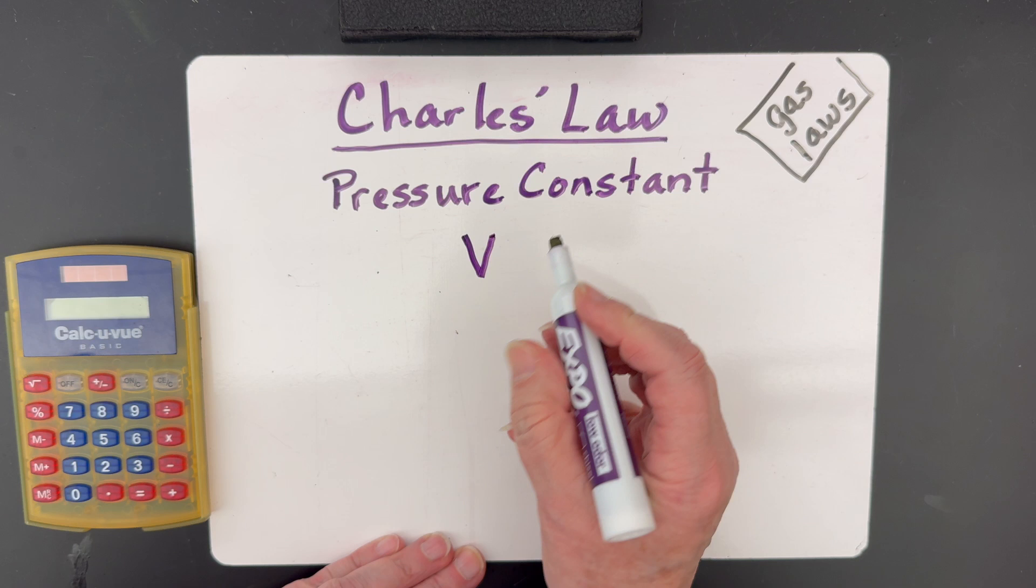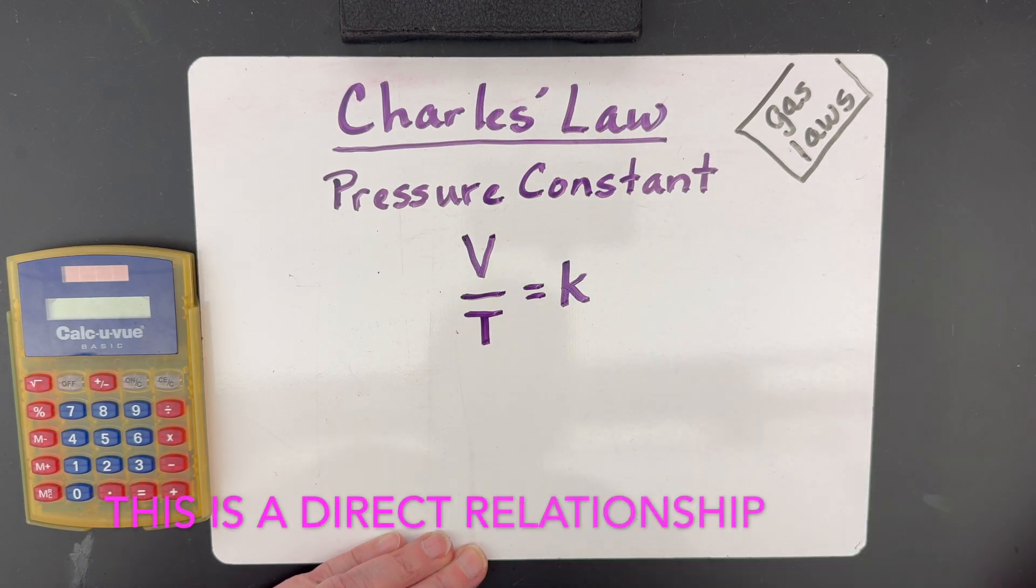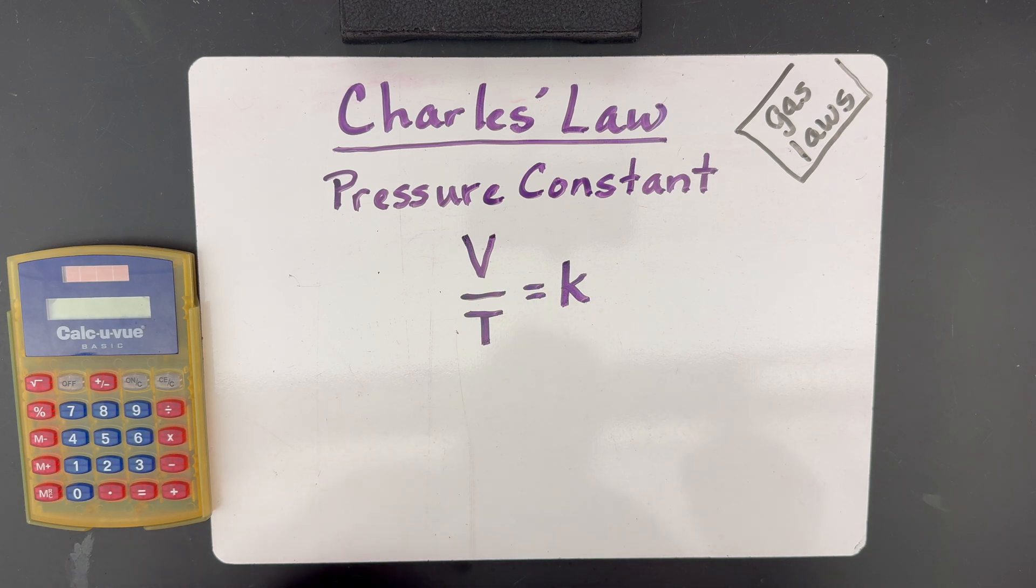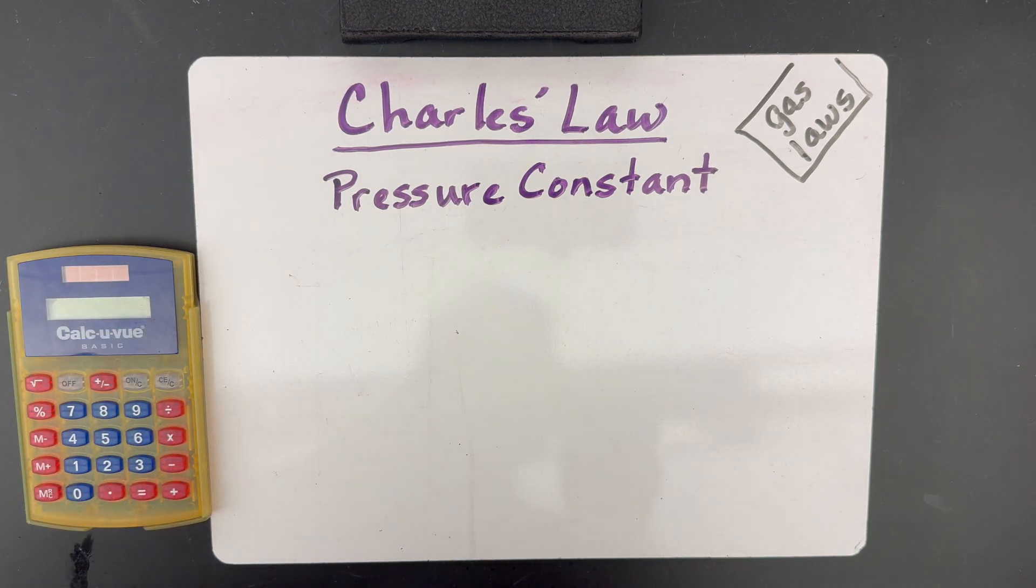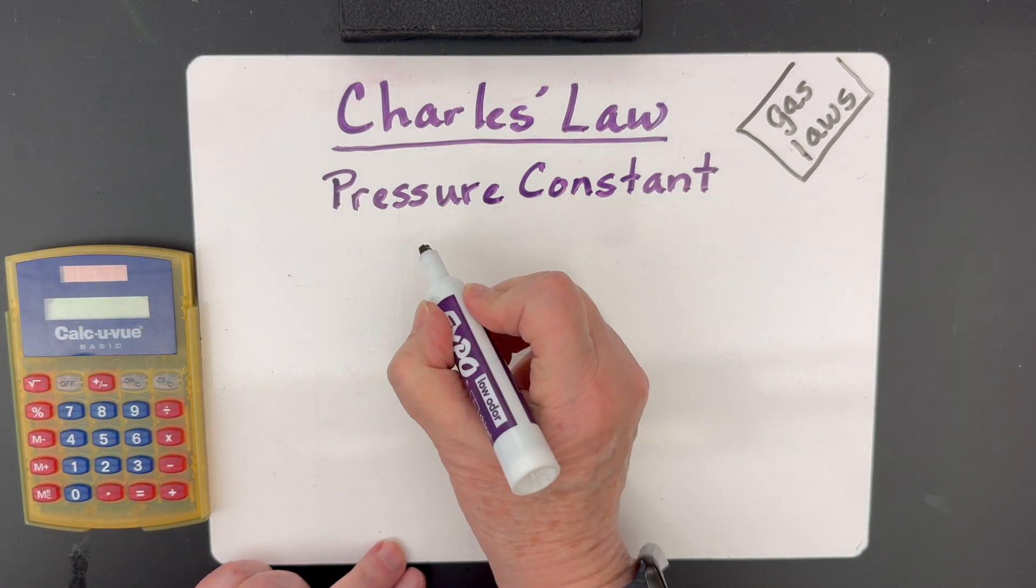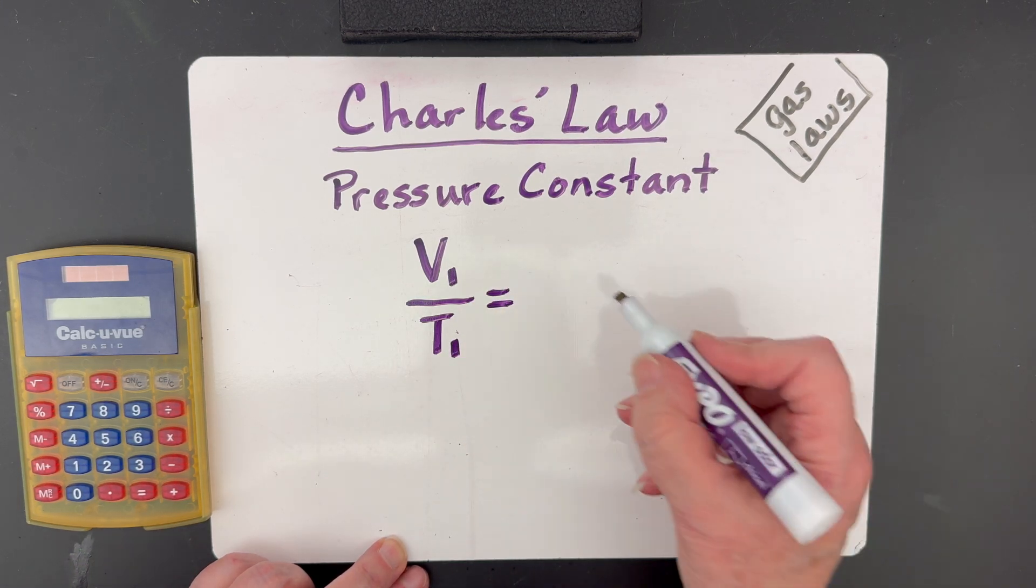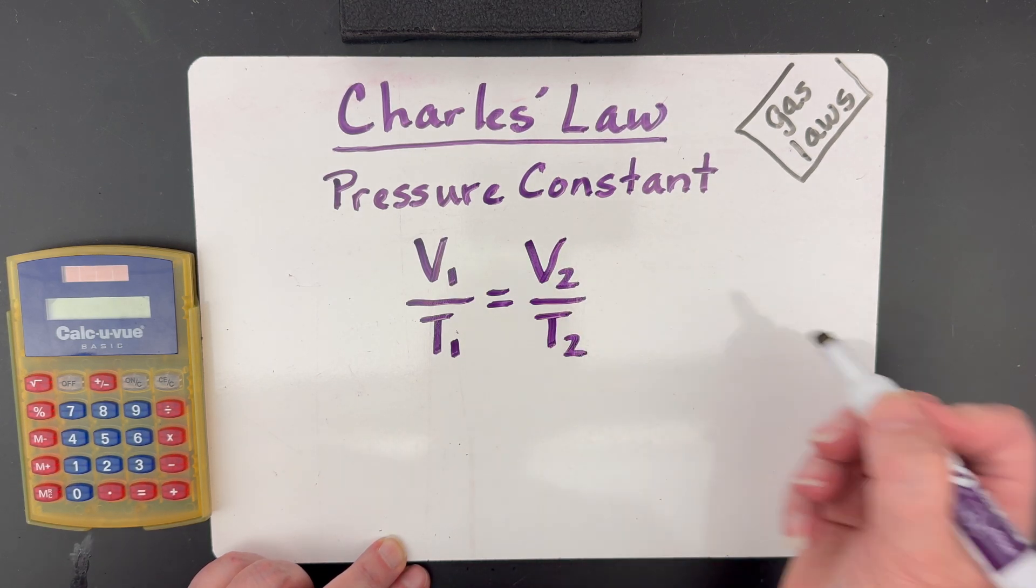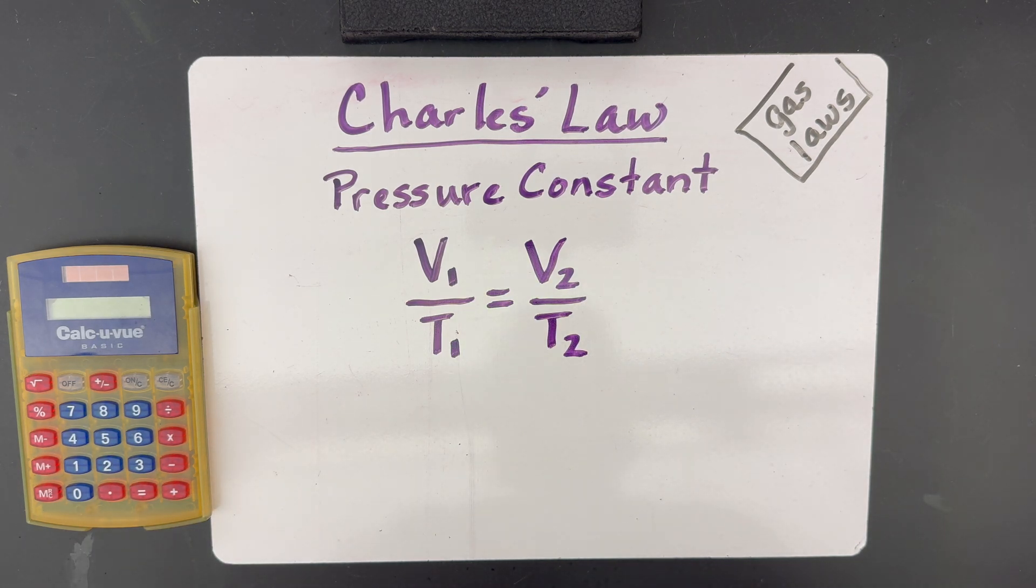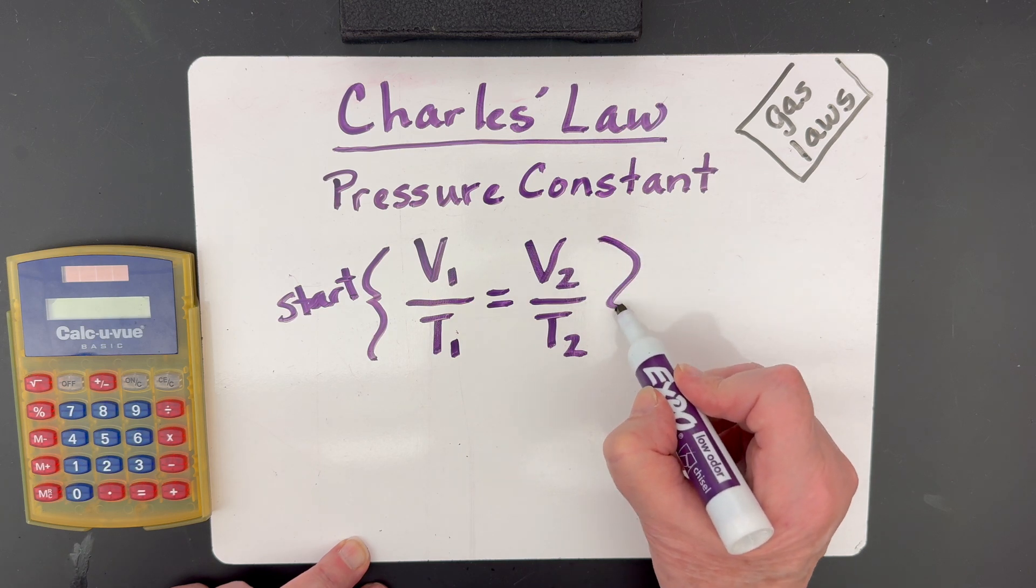Charles Law says that the volume divided by the temperature is equal to a constant. That's not the form that we generally use it in, but that's what his law says. The form that we actually use it in is when we have changing conditions. So we have a beginning volume and a beginning temperature. And since that equals a constant, the ending volume divided by the ending temperature will equal the same constant. So we can set them equal to each other. So this is the start, and this is the conditions at the end.